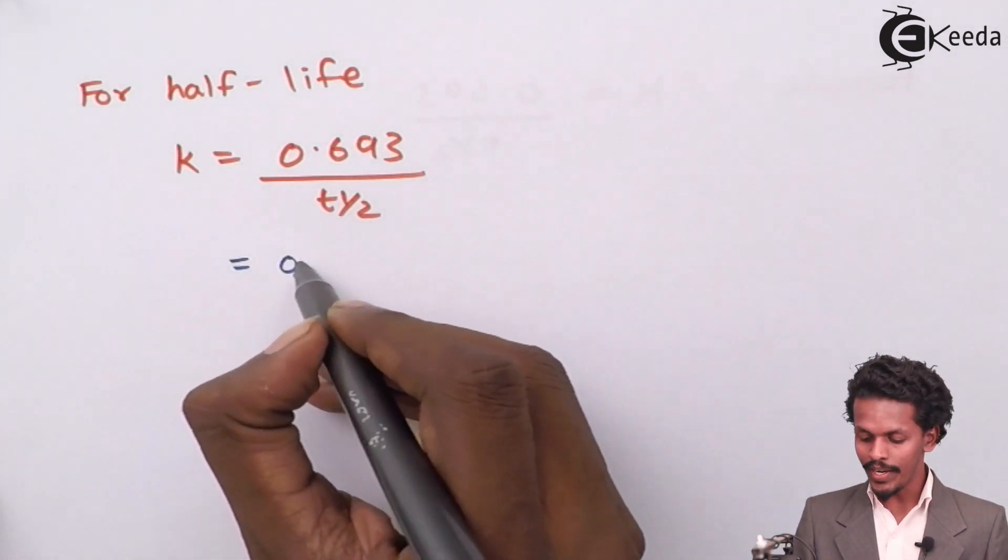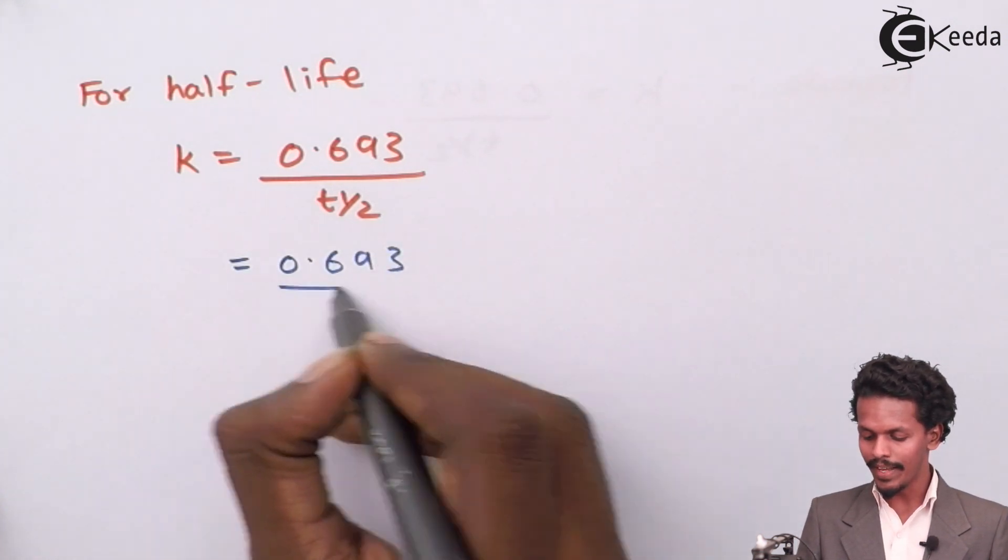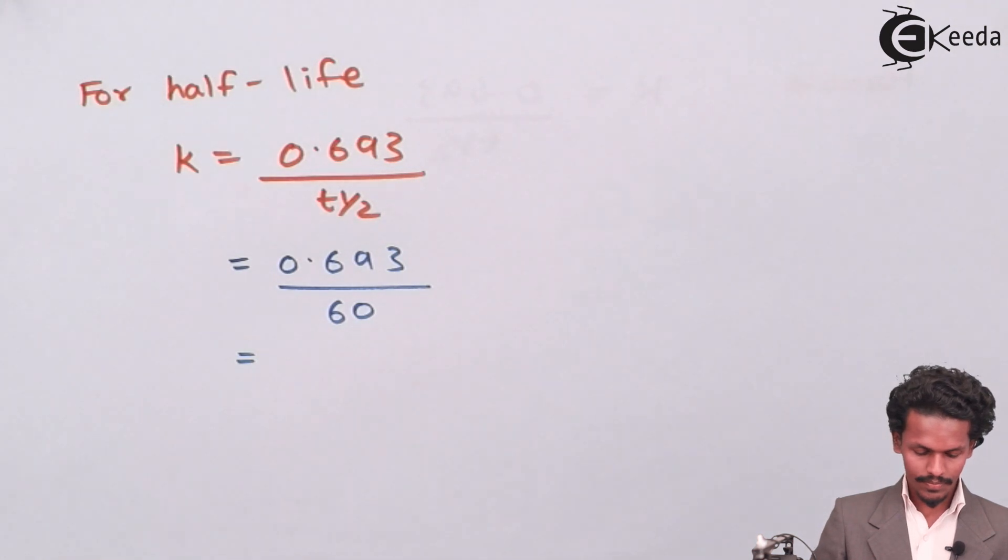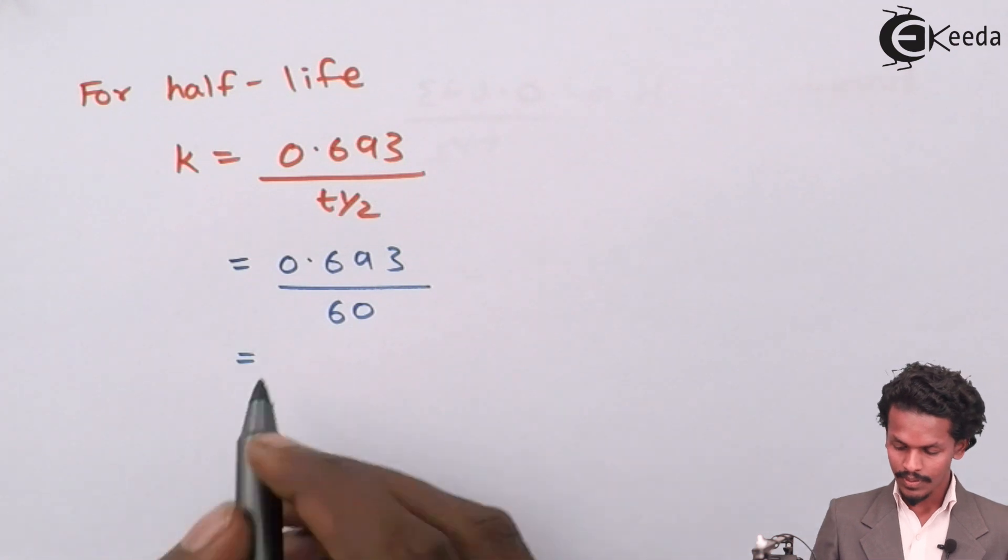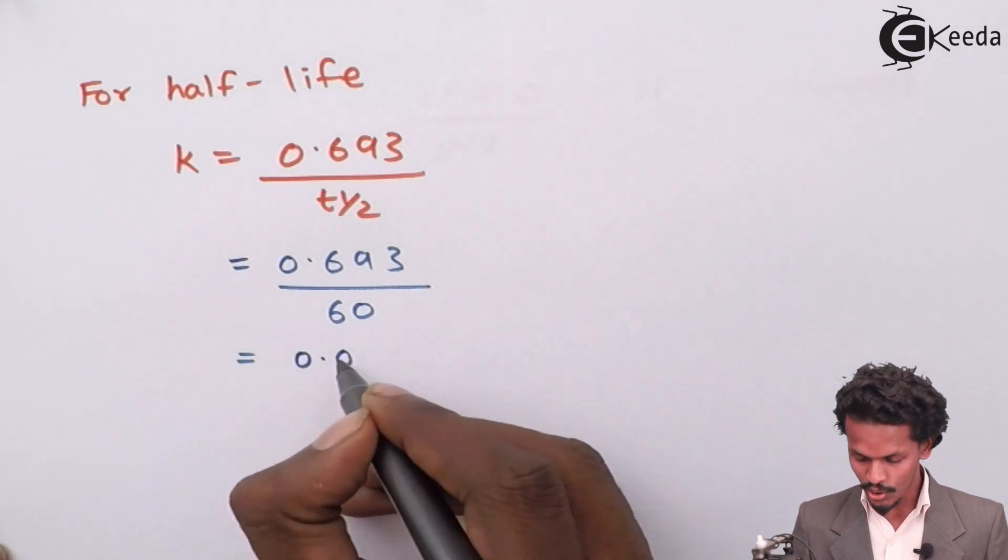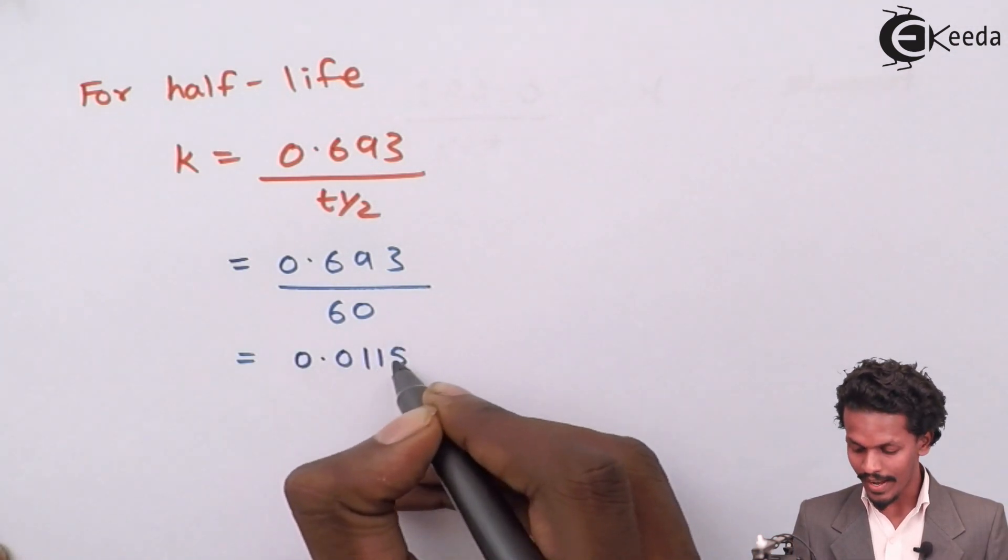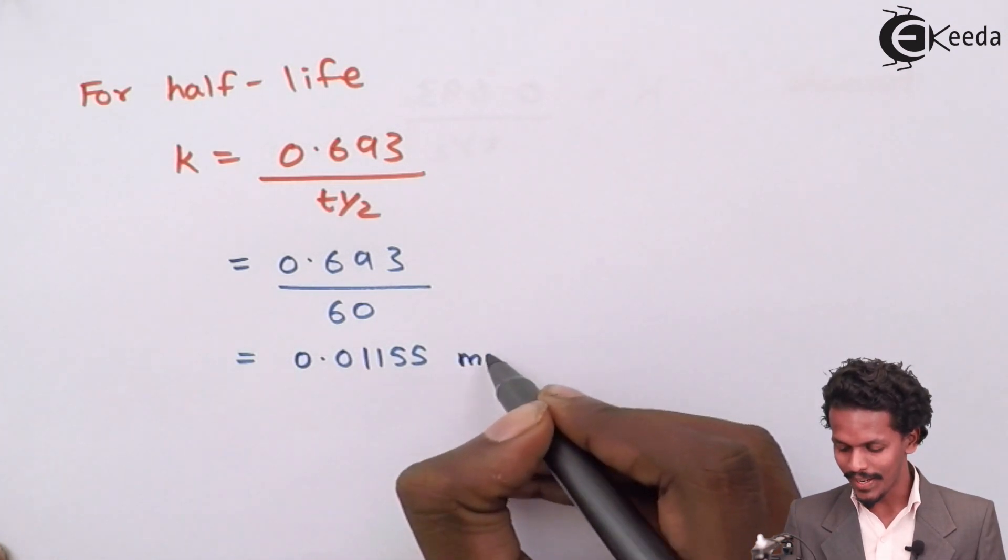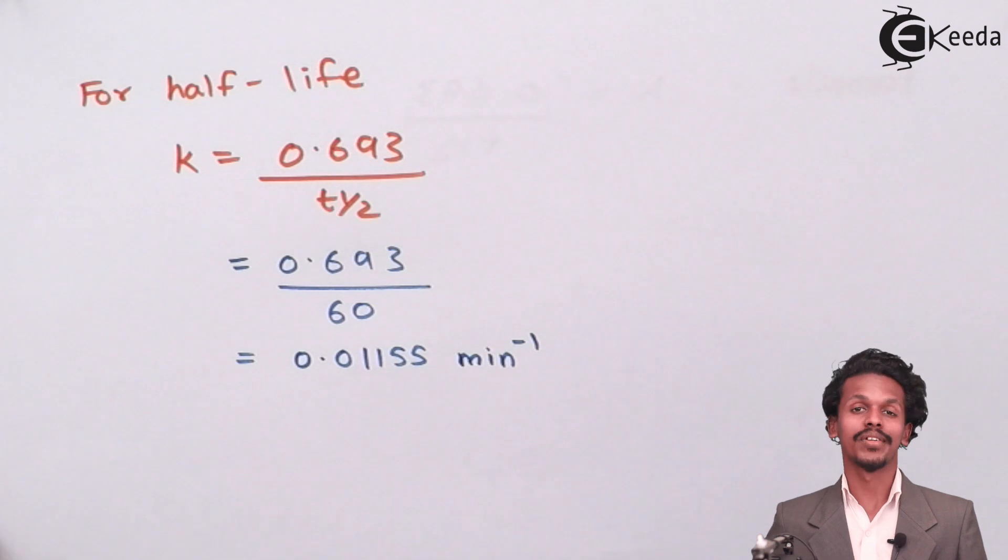So 0.693 divided by 60 gives us 0.01155 min⁻¹.